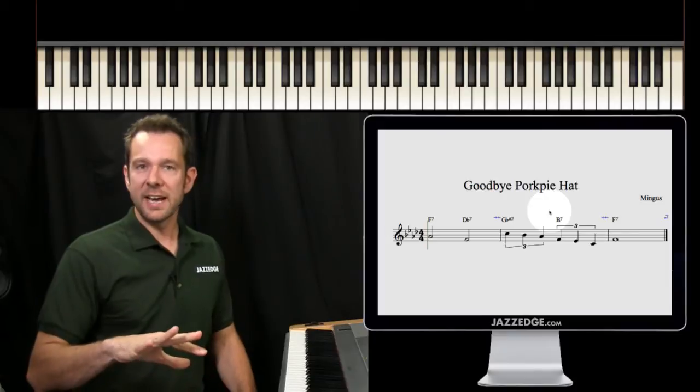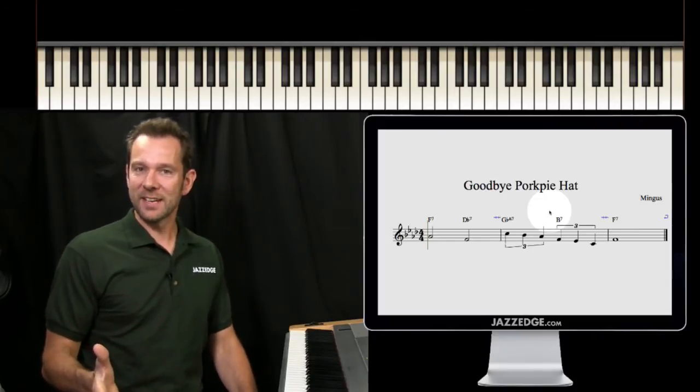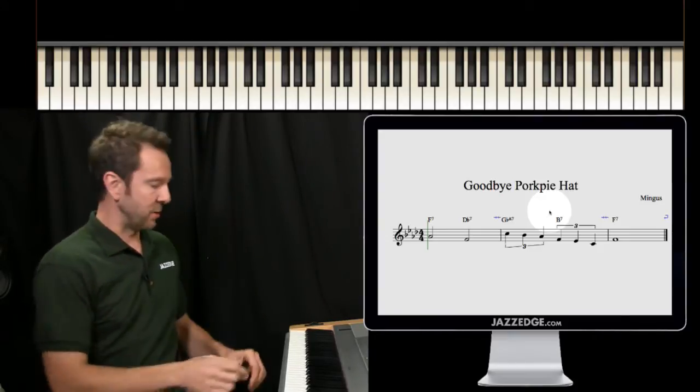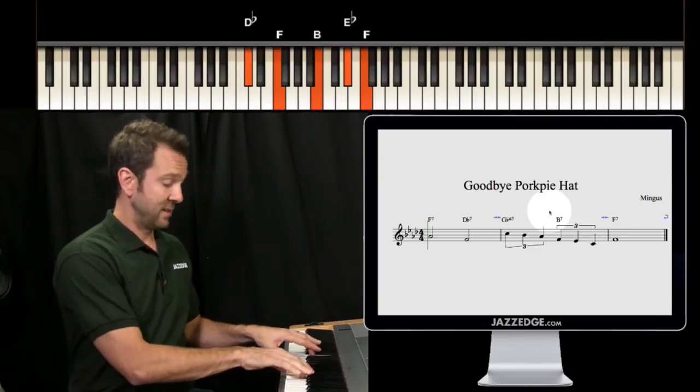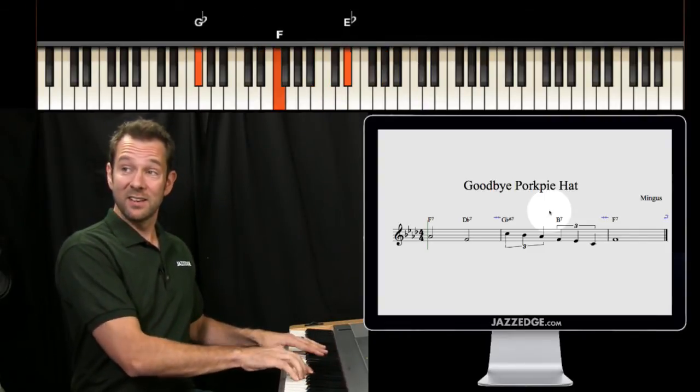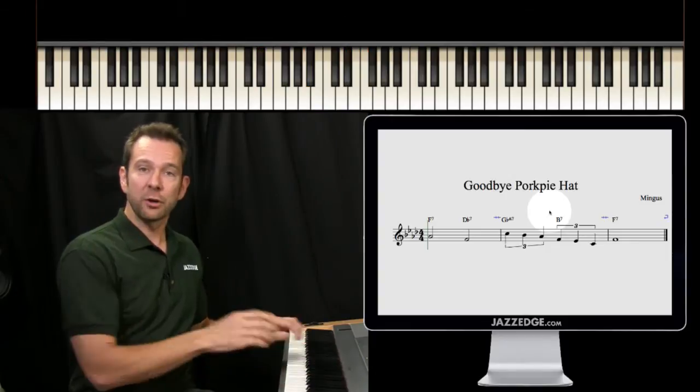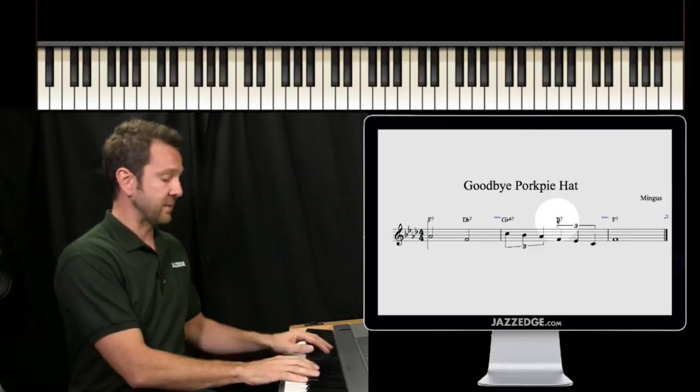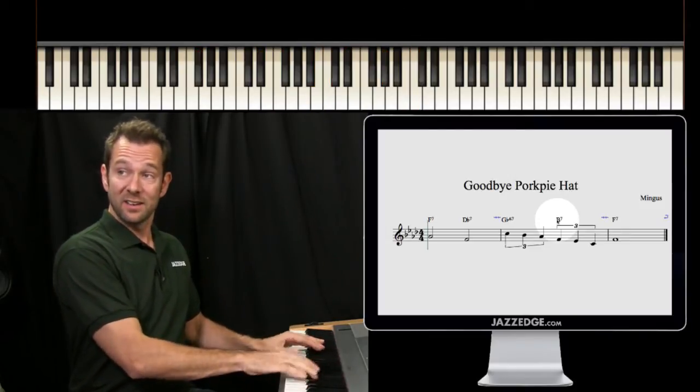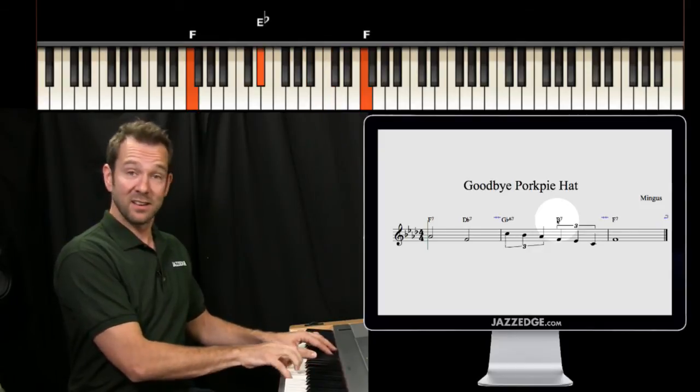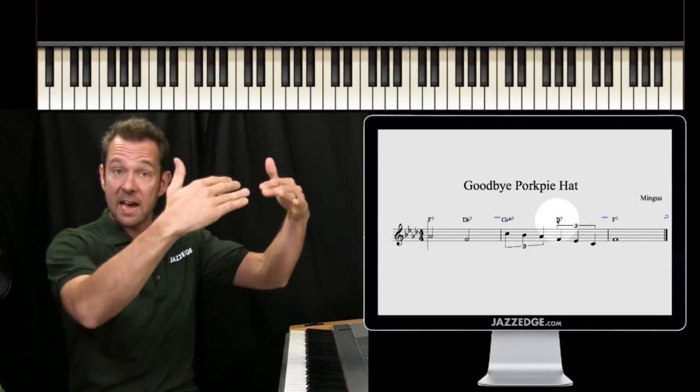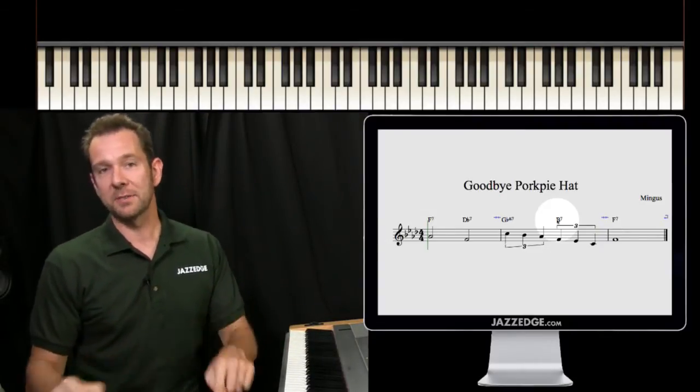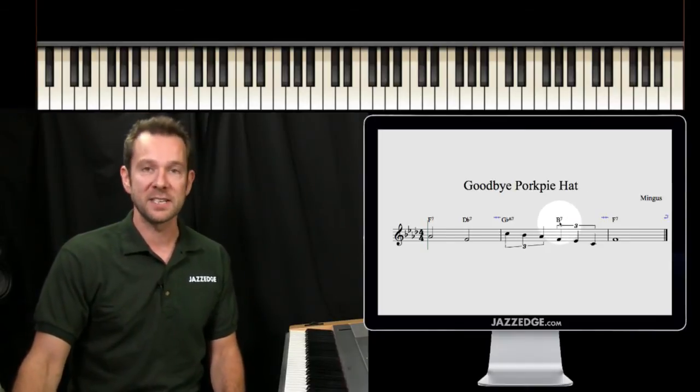So we could change that to a Gbmaj7. So now all we're doing is we're changing the quality of the chord from a dominant chord to a major chord. Could we go from that Gb over here into the F and kind of get in there a little bit earlier? Let's see what that sounds like. Yeah, we could do that as well, because remember a lot of times that half step then resolves down. But now this is where it gets interesting. It doesn't go down a half step to F. Instead, now we finally get to this B7 chord.